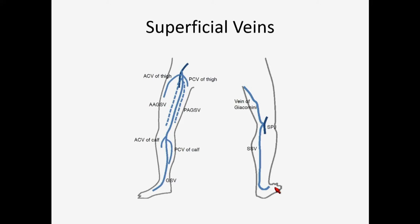Similarly, the small saphenous vein again arises from the dorsal pedal venous arch. It goes posteriorly through the gastrocnemius muscle — superficial to the muscular fascia — and then finally joins the popliteal vein through the saphenopopliteal junction, just like the saphenovenous junction. It may give rise to a superior branch vein. There are many variations of the small saphenous vein that we should be careful about so that we don't over-diagnose reflux.